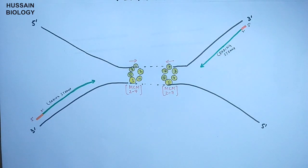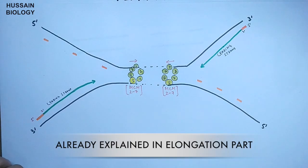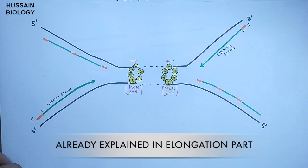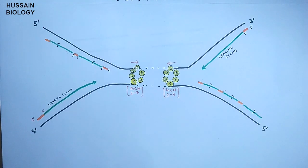Furthermore, we have lagging strand synthesis where multiple primers are added to provide 3 hydroxyl ends for DNA polymerases, continuously leading to synthesis of DNA strands in the form of Okazaki fragments. So this concludes the elongation of the DNA molecule.